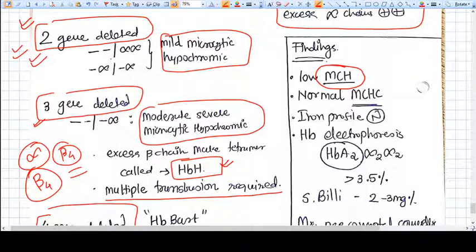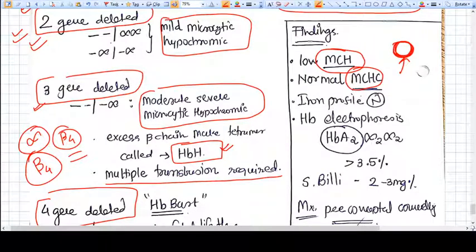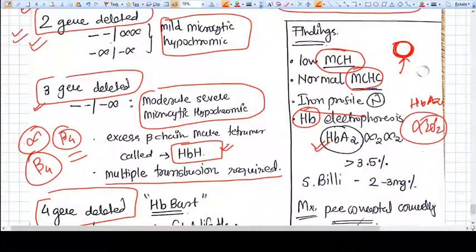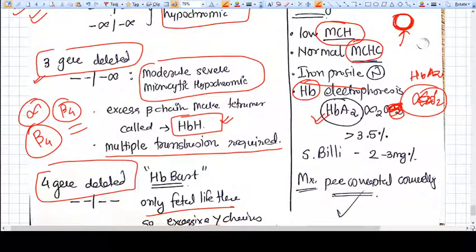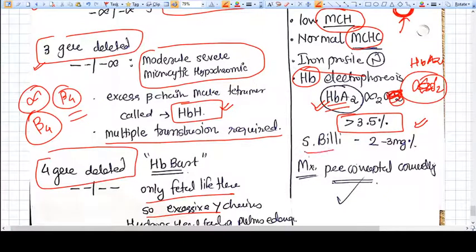We see normal MCHC. The concentration is normal because the RBCs are smaller in size and have smaller amounts of hemoglobin, so we get normal MCHC. Iron profile will be normal. Hb electrophoresis will show HbA2, which is alpha-2 delta-2. If we do Hb electrophoresis, the level of HbA2 will be more than 3.5%. There is significant hemolysis going on, so serum bilirubin will also be high.